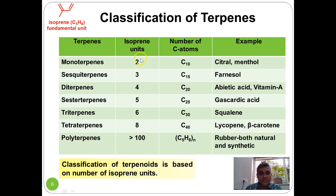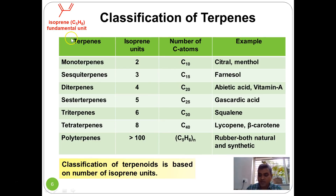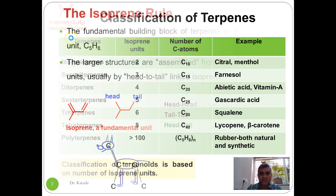When a terpenoid contains more than 100 isoprene units, the resulting molecule is called polyisoprene, and polyisoprene is known as natural rubber. This is the classification of terpenoids based upon the isoprene molecule.